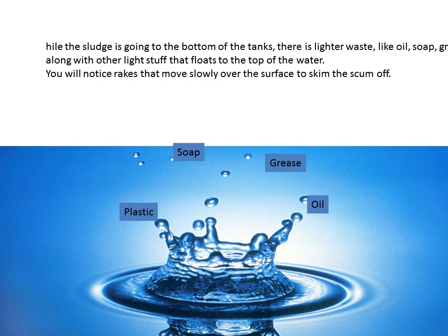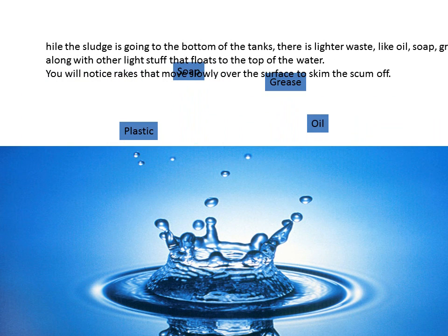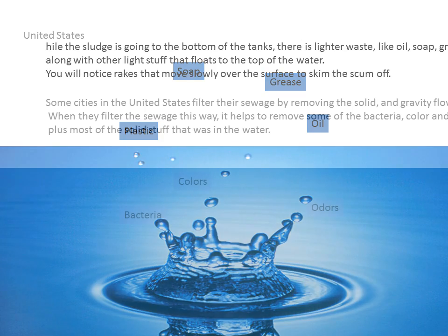While the sludge is going to the bottom of the tanks, there is lighter waste, like oil, soap, grease, and plastics, along with other light stuff that floats to the top of the water. You will notice rakes that move slowly over the surface to skim the scum off.